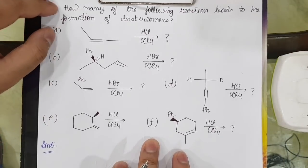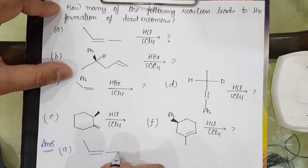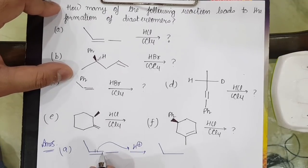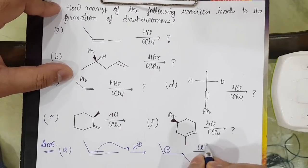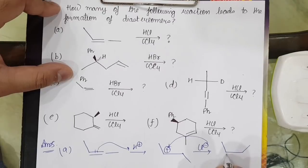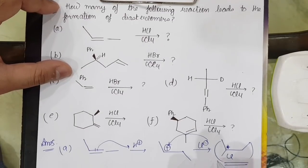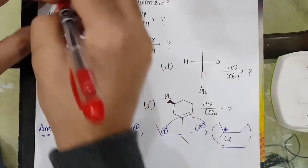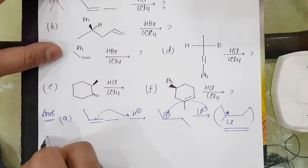First option, HCl along with CCl4. What will H plus give? H plus and Cl minus will go, giving me the formation of chlorination. Chlorine will get attached, and this will be an enantiomer because RS configuration can be there. So diastereomer formation? Enantiomer formation will occur. Everything is logical.